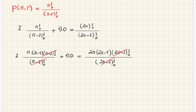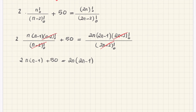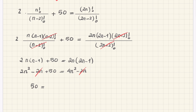So it's a simple equation: I have 2n times n minus 1 plus 50, and on the right-hand side I have 2n times 2n minus 1. Multiplying 2n inside gives 2n squared minus 2n plus 50, and on the right-hand side I get 4n squared minus 2n. Moving terms, the 2n terms cancel, leaving 50 on the left. Moving 2n squared to the right gives 4n squared minus 2n squared equals 2n squared. Dividing both sides by 2 gives 25.